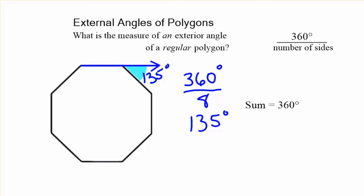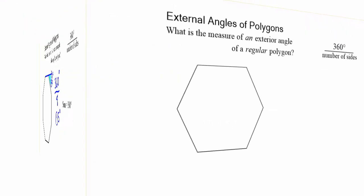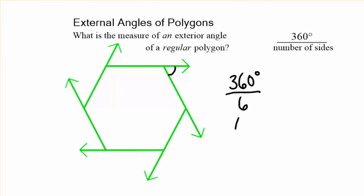So let's see how this works on a six-sided figure. Let's start here with this hexagon. We'll draw an exterior angle right there. And it's 360 degrees all the way around that polygon. And to find one of those six angles, we just take 360 degrees and divide by 6. The number of sides is the number of angles. It's 60 degrees.